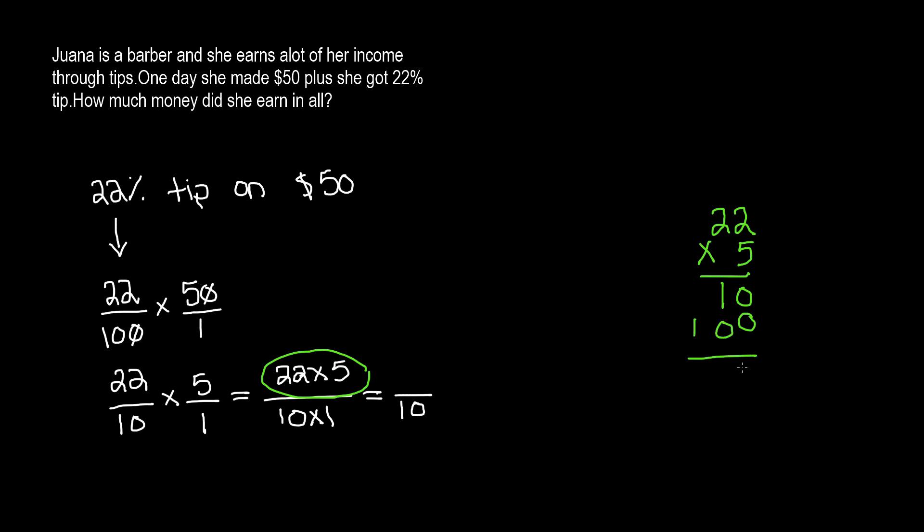And when we add this we get 110, and that is going to be our numerator: 110. Now we have a fraction 110 over 10. What we need to do is we need to divide this. 110 divided by 10 is going to give us 11, and this is $11.